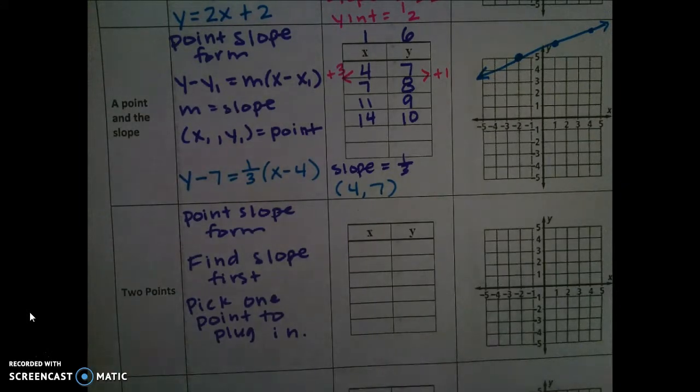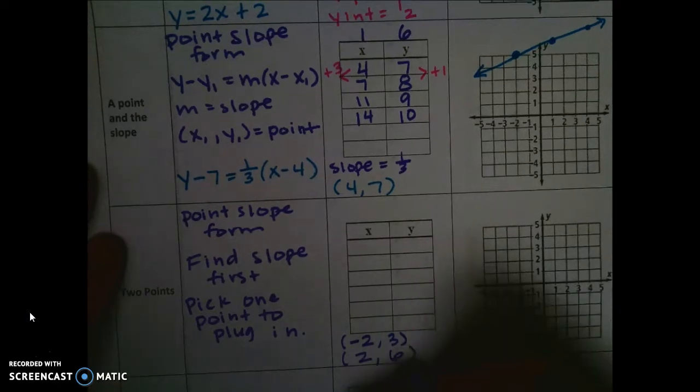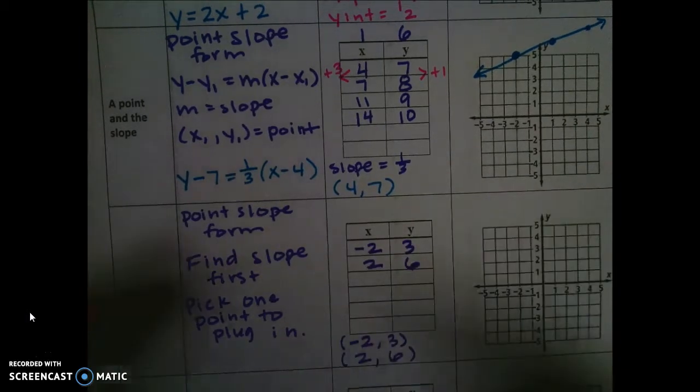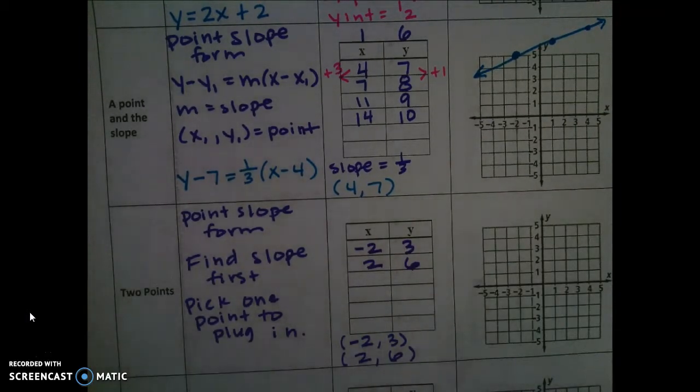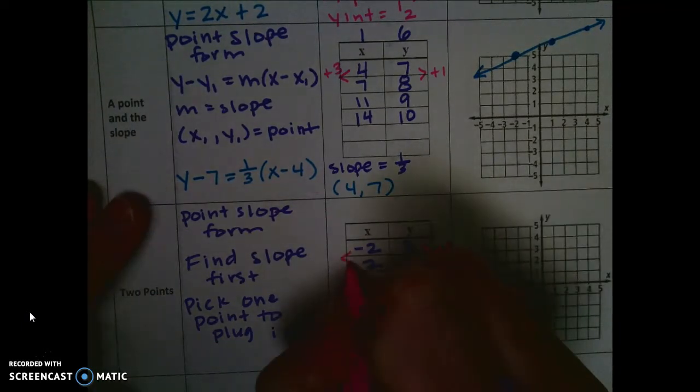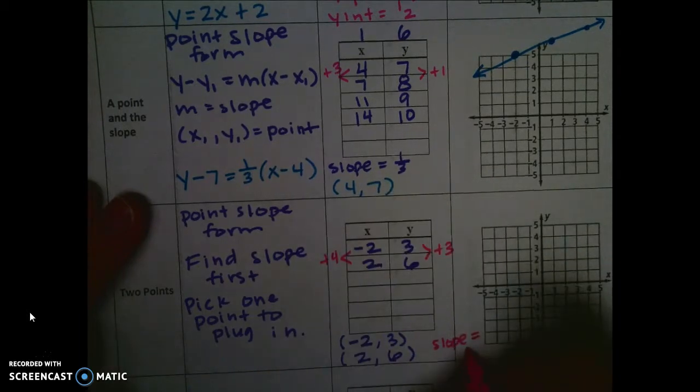So let's say we are given the points negative 2, 3, and 2, 6. So I'm going to put those into the table, so negative 2, 3, and then 2, 6. So the first thing I need to do is find the slope. So the change in y is plus 3, and the change in x is plus 4. So my slope is 3 fourths.